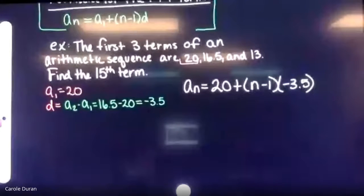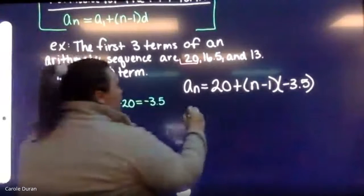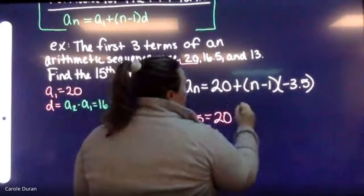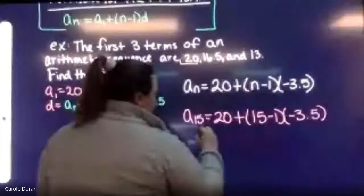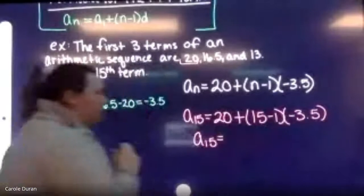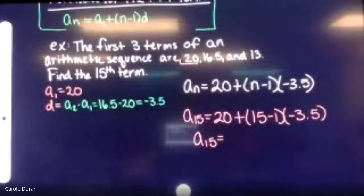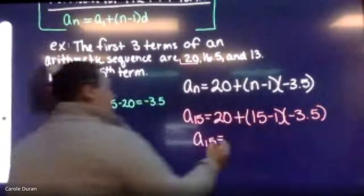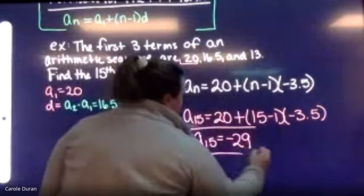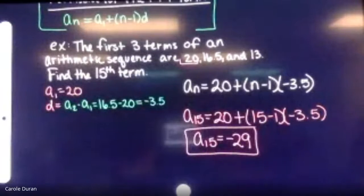Just plug 15 in for n and solve with a calculator. So a(15) equals 20 plus 15 minus one times negative 3.5, which gives us negative 29.